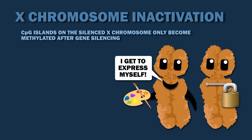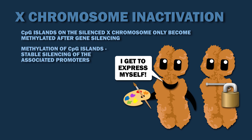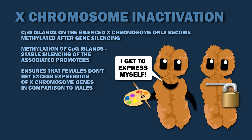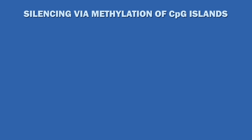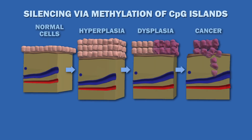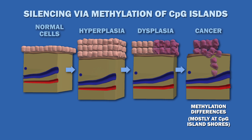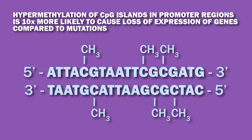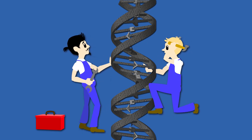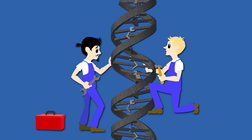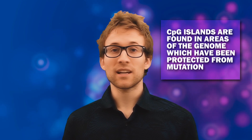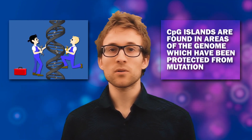X-chromosome inactivation is a normal developmental process where the methylation of CpG islands results in the stable silencing of the associated promoters. This ensures that females don't get excess expression of X-chromosome genes in comparison to males. One important implication of this silencing via methylation is for cancer. Cancerous tissues have methylation differences from their original tissues, and most of these methylation differences occur at CpG island shores, which are located at short distances from islands, not on the islands themselves. Hypermethylation of CpG islands in promoter regions is ten times more likely to cause loss of expression of genes compared to mutations. If this hypermethylation results in the repression of DNA repair genes, this can promote cancer development. So CpG islands would be found in areas of the genome which have been protected from mutation, such as the promoters of those DNA repair genes.